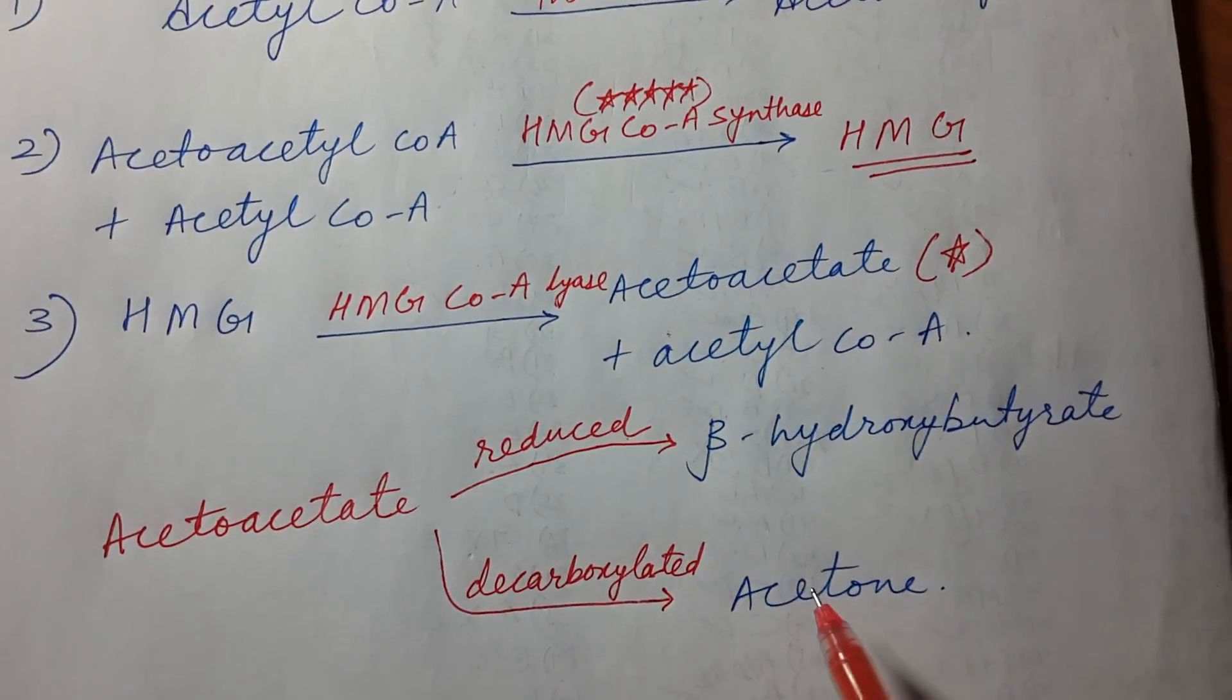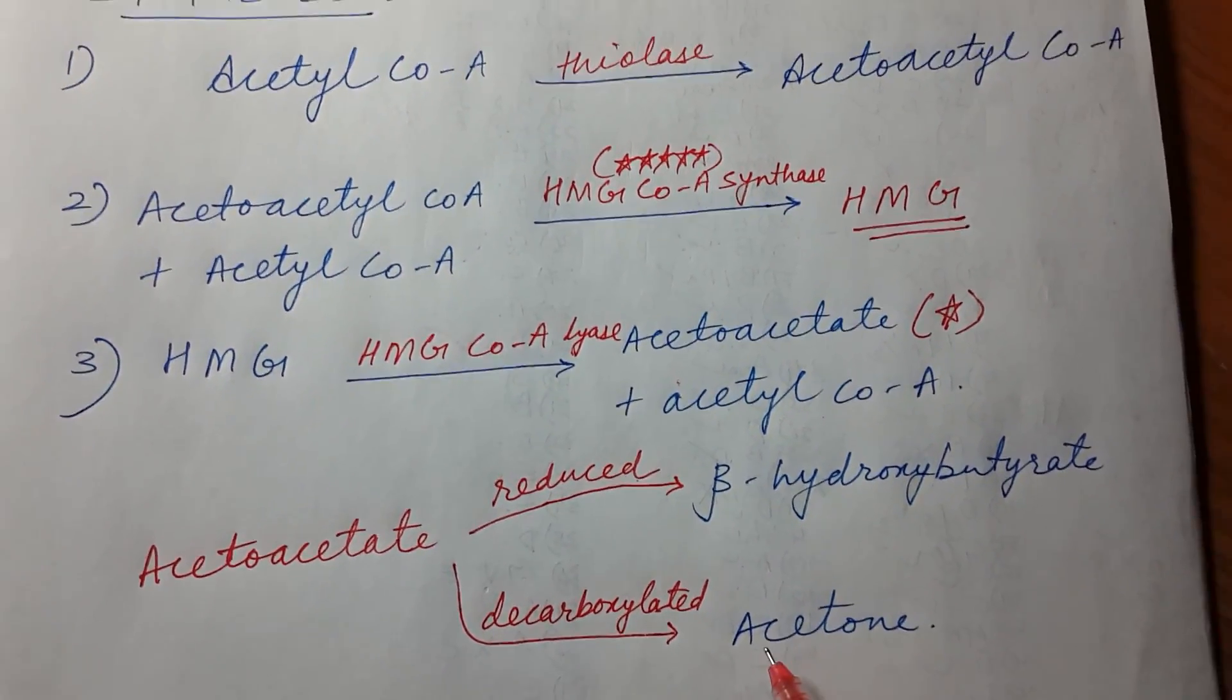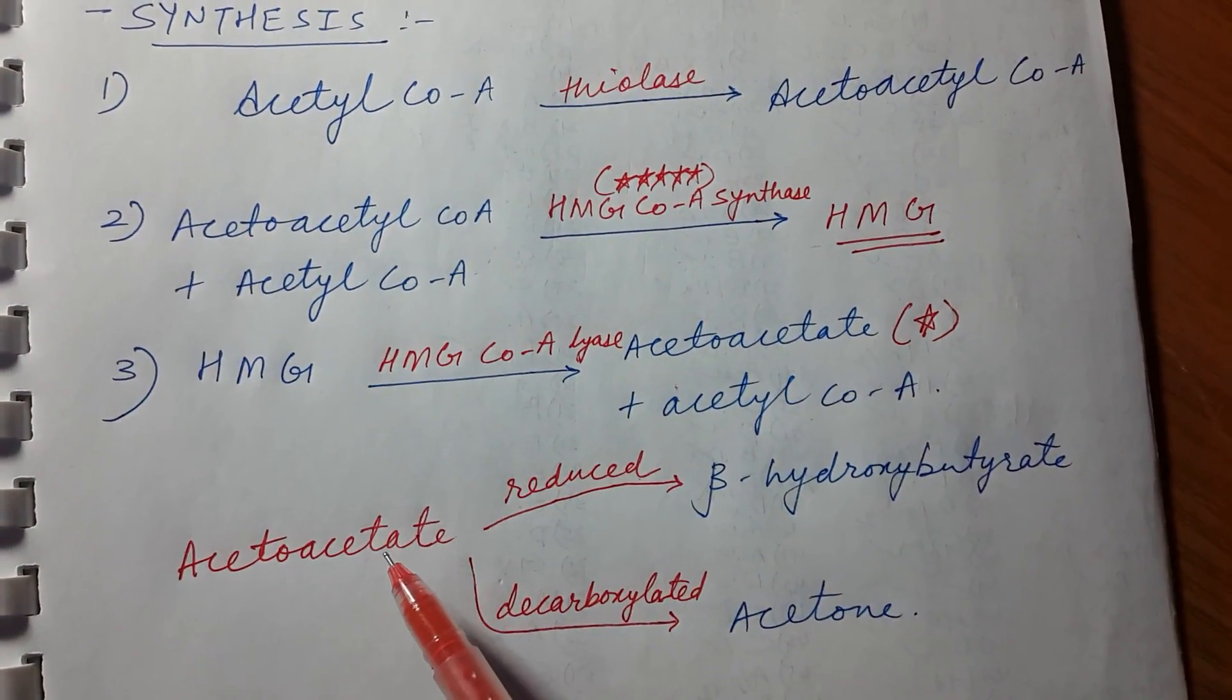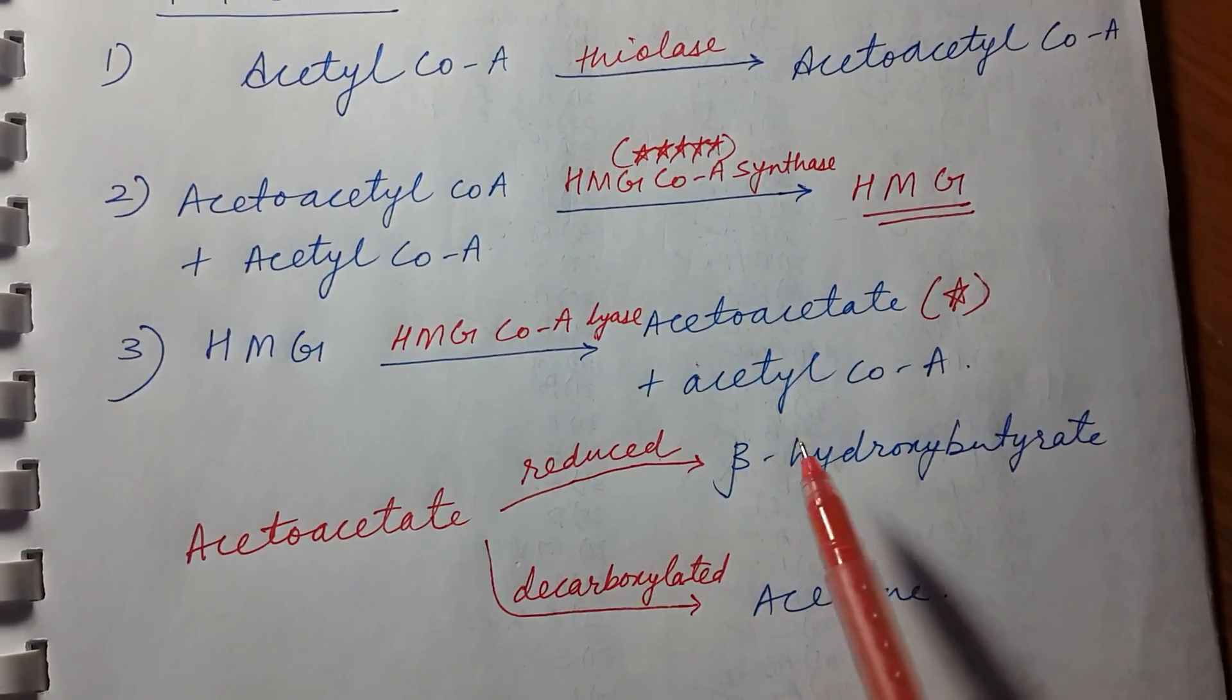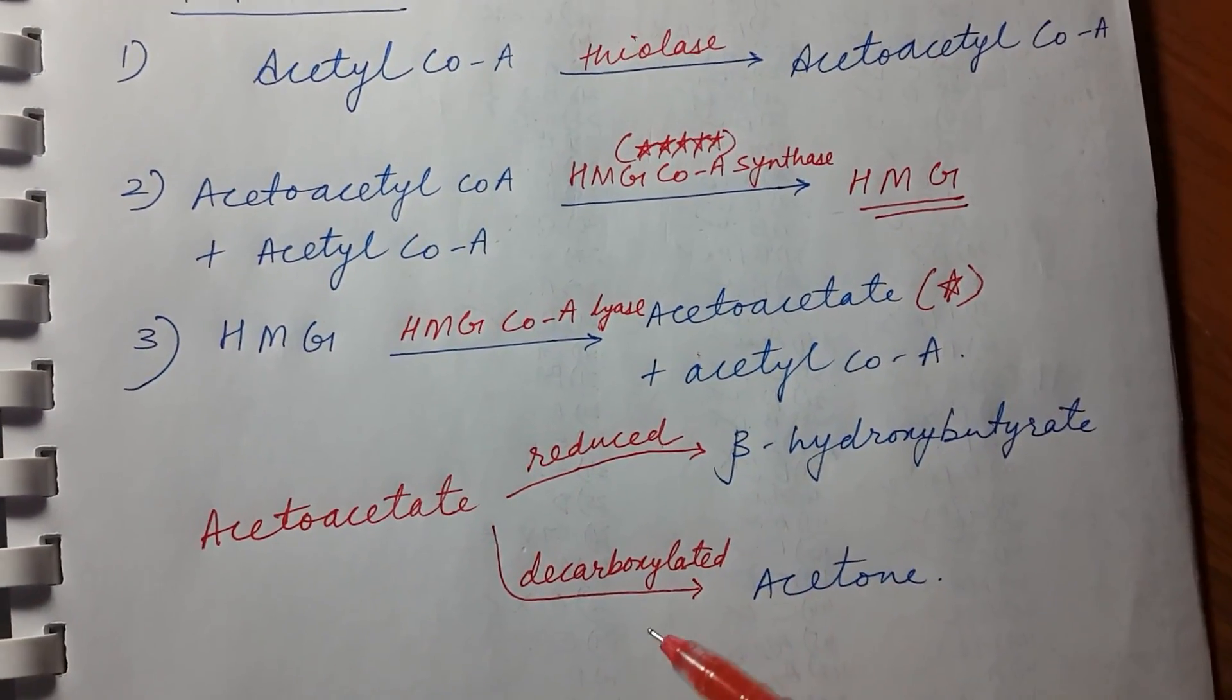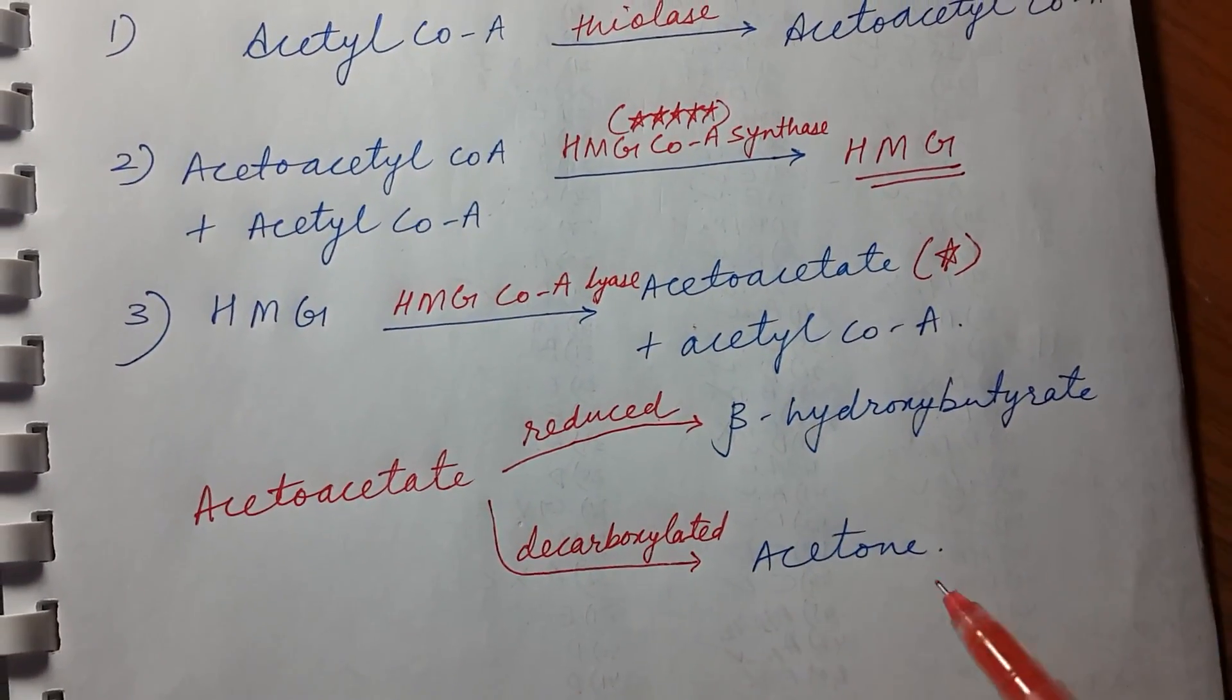In this way, from acetyl coenzyme A we can make acetoacetate, beta-hydroxybutyrate, and acetone. So in short, these are the three ketone bodies.